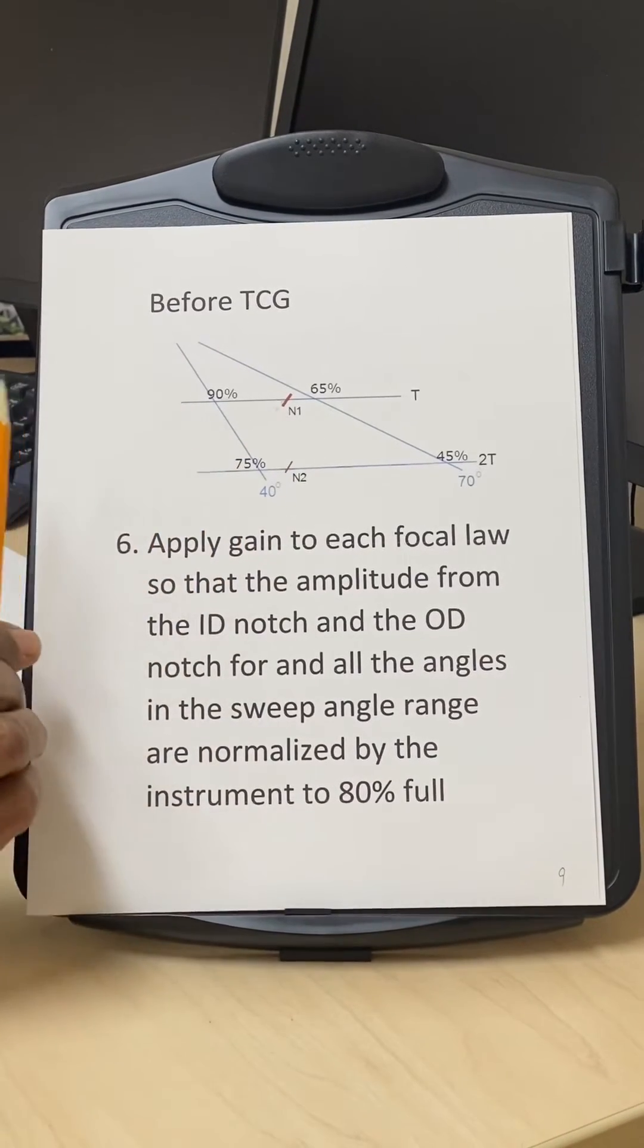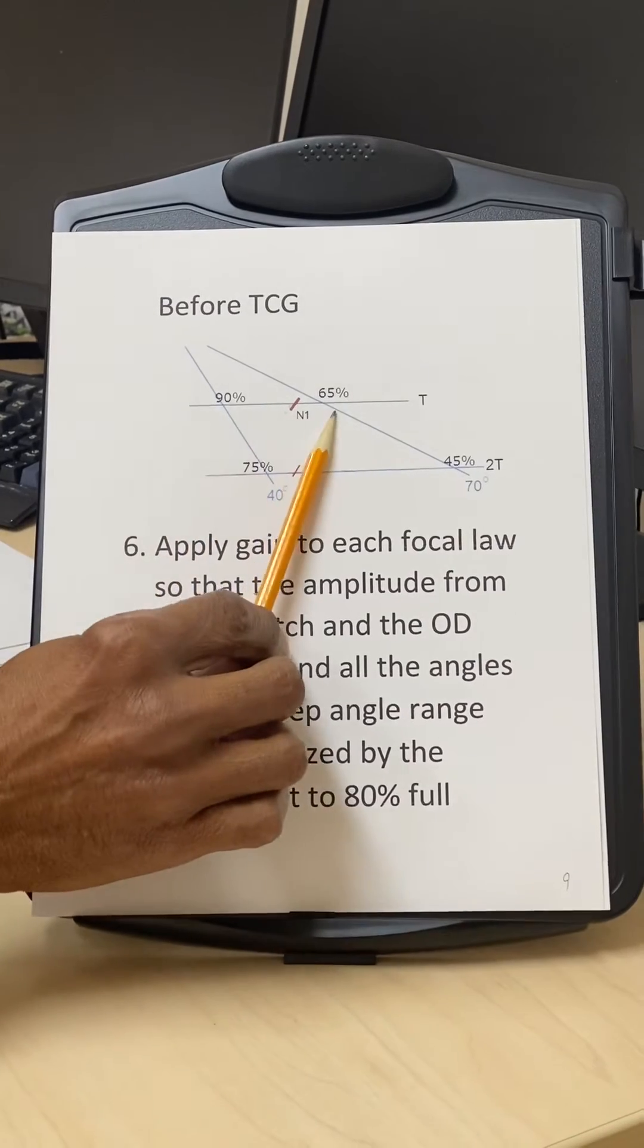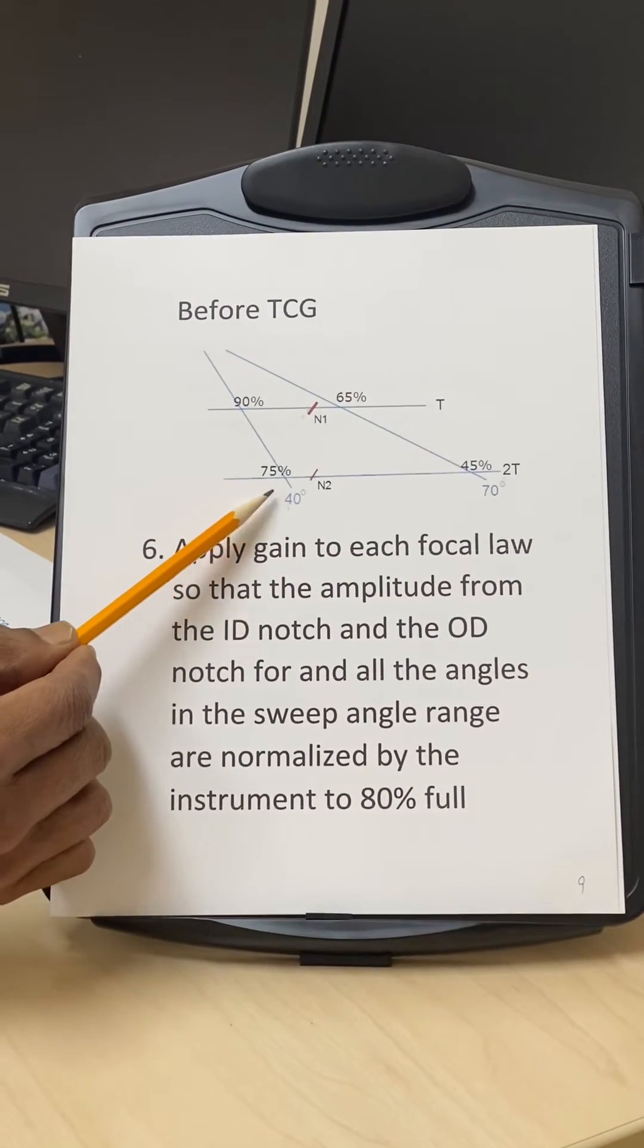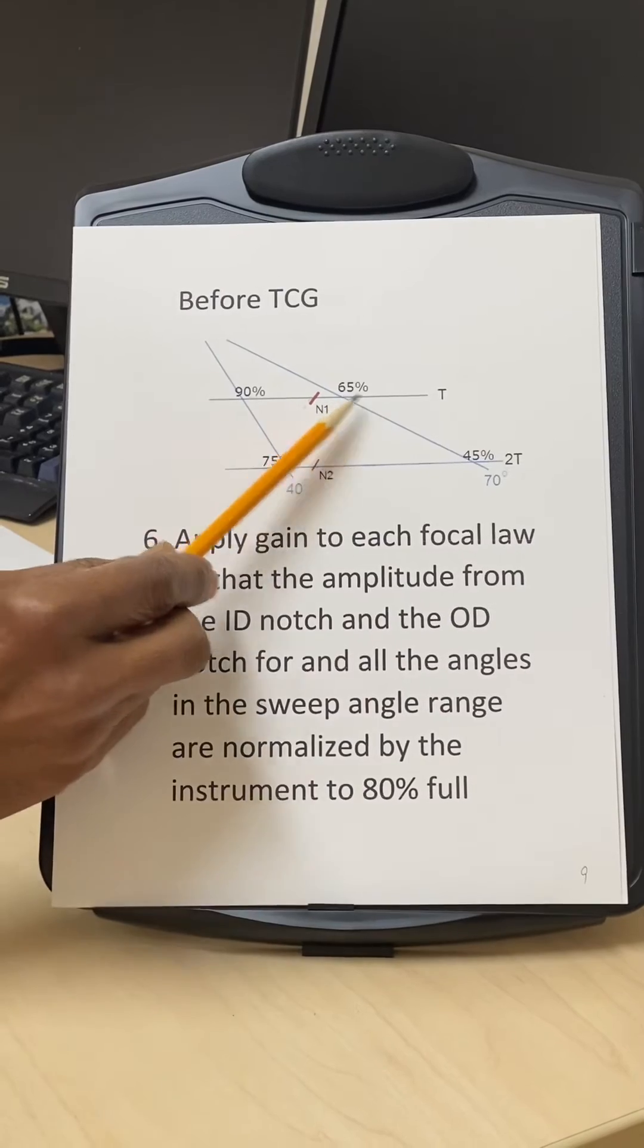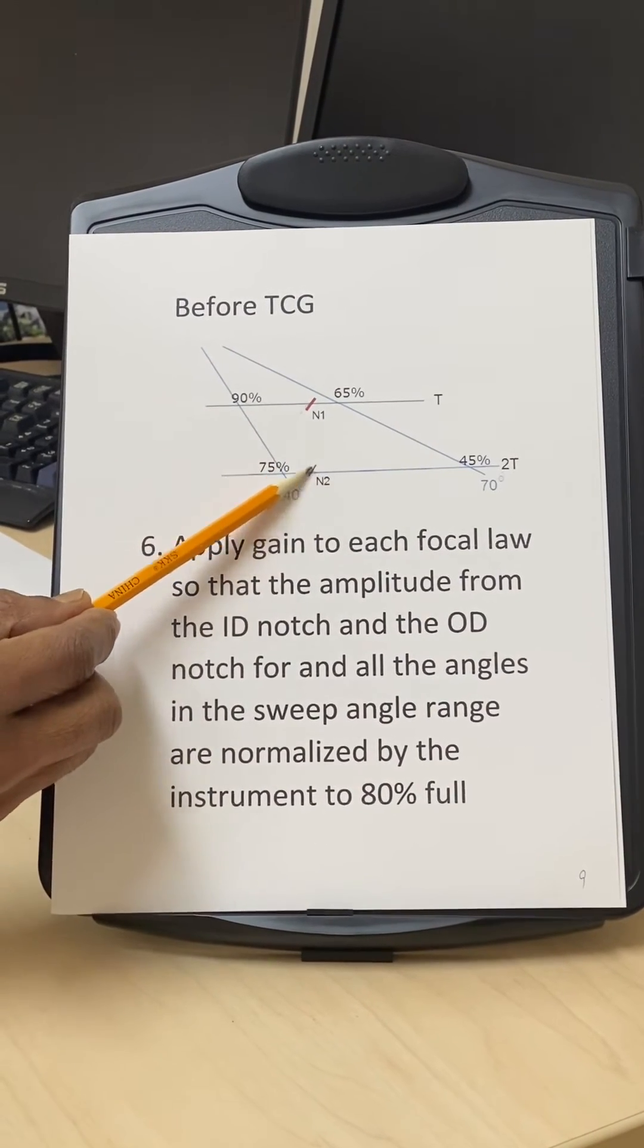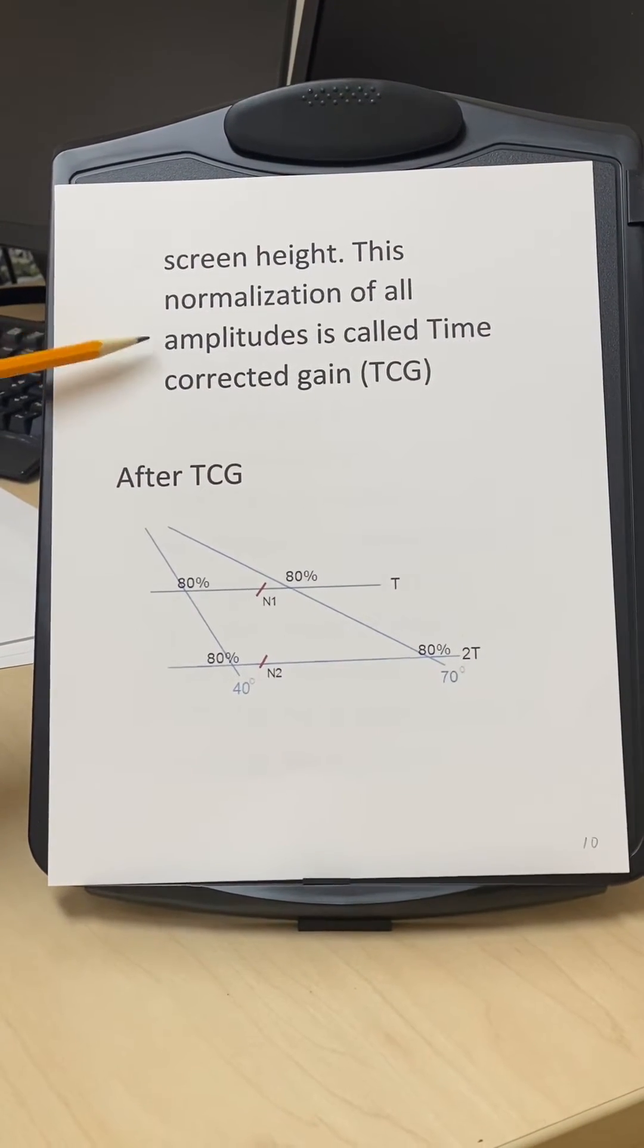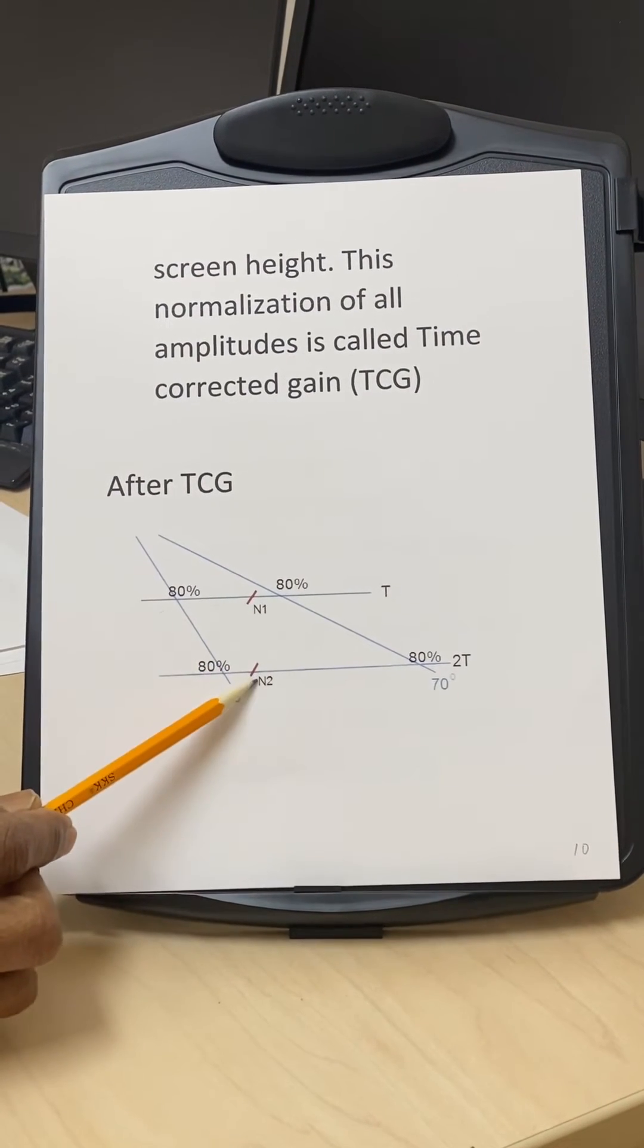That's a variation in the amplitudes. What we want to do is normalize these amplitudes so that we get the same amplitude for all the angles and for all the depths. So we apply a gain to each focal law, from 40 to 70 degrees. There are going to be either 31 focal laws or 61 focal laws. We have to apply the gain on each of these focal laws so that all of these numbers become 80%, and the amplitude for notch N1 and N2 get equalized.